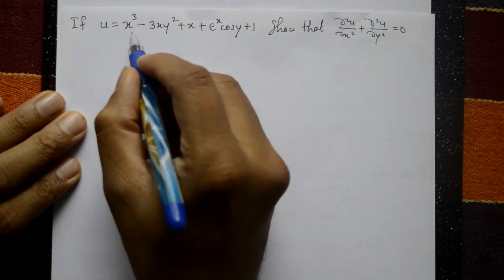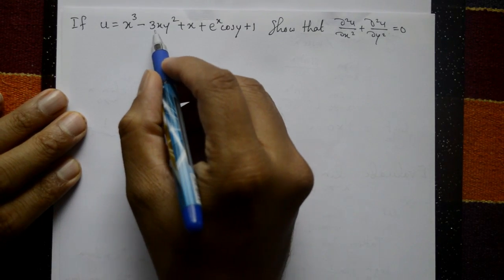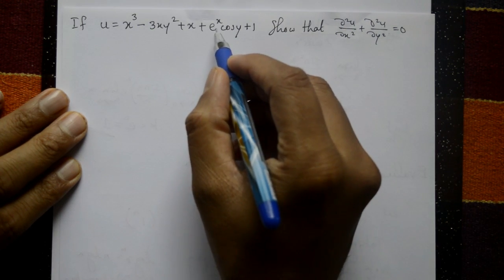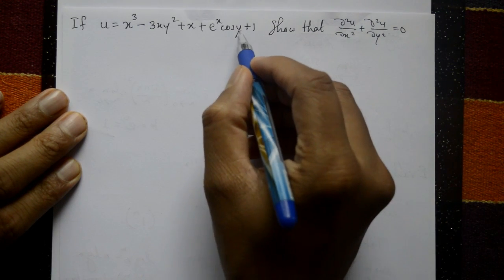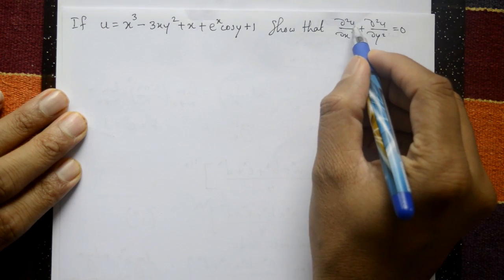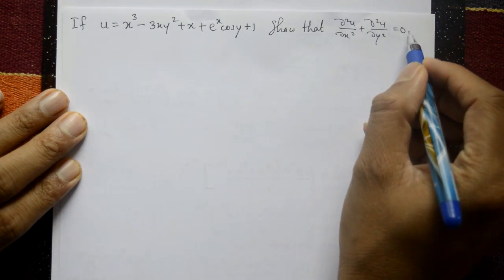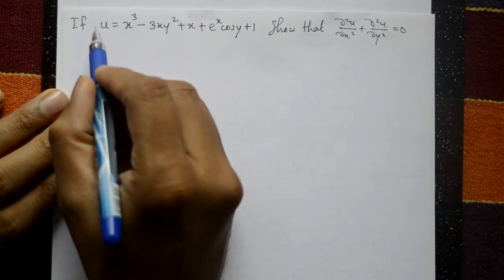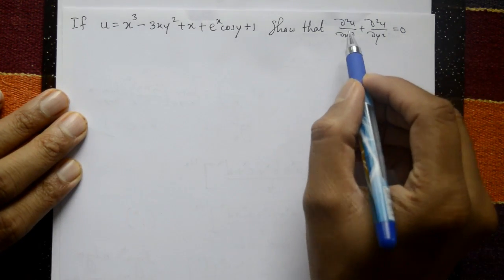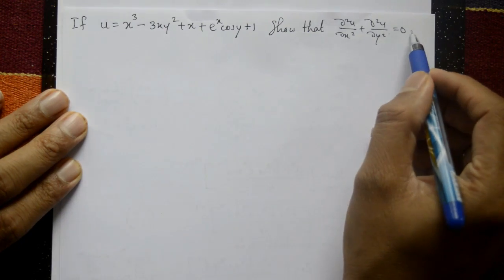If u is equal to x cube minus 3xy square plus x plus e raised to x into cos y plus 1, show that ∂²u/∂x² + ∂²u/∂y² = 0. Differentiate u with respect to x 2 times and with respect to y 2 times, add them and you get 0.